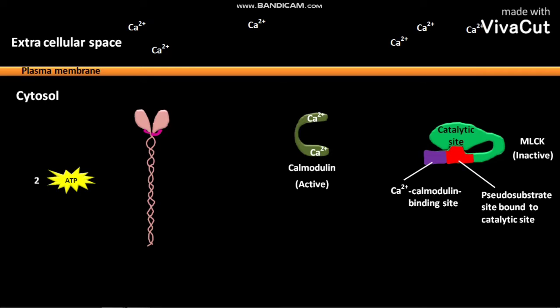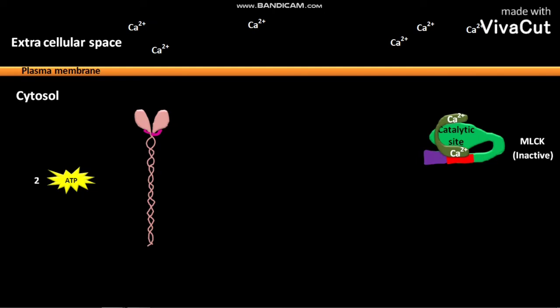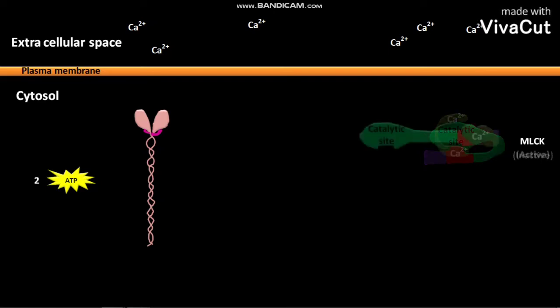The calcium-calmodulin complex then binds to a region of MLCK that overlaps the pseudosubstrate site. When this binding occurs, the stretch of amino acids present in the pseudosubstrate region is pulled away and is prevented from binding to the active site of MLCK. As a result, an active MLCK is formed.